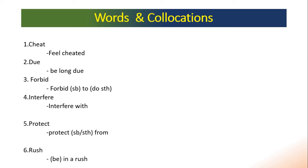Let's talk about the words in collocations. Cheat: 'feel cheated' — it means to think that you have been treated wrongly or unfairly. Forbid: 'forbid somebody to do something' — to stop someone from doing something. For example: the teachers forbid students from cheating in the exam.